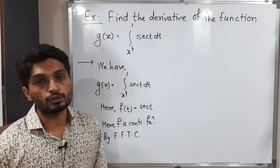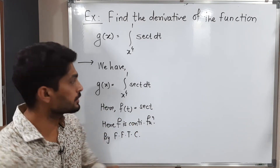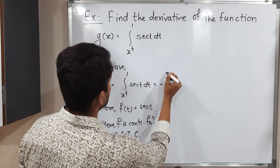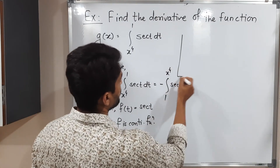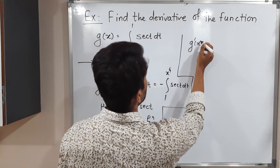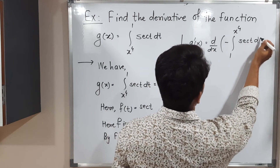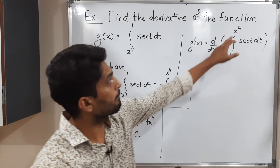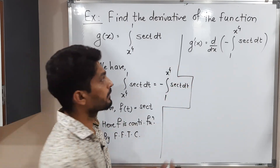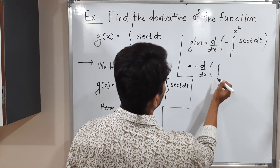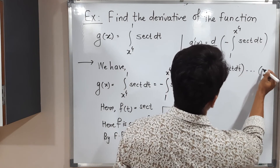The problem is that the lower limit of integration should be a constant, but here we have a variable lower limit and the upper limit is one. So we will interchange them. To interchange, you simply write a minus sign outside and change the limits. So we have minus the integration from 1 to x⁴ of sec t dt. We have brought the given integral into standard form. So we apply the First Fundamental Theorem of Calculus. Therefore g'(x) is the derivative of minus the integration from 1 to x⁴ of sec t dt. I am going to put x⁴ equal to u, where u equals x⁴.